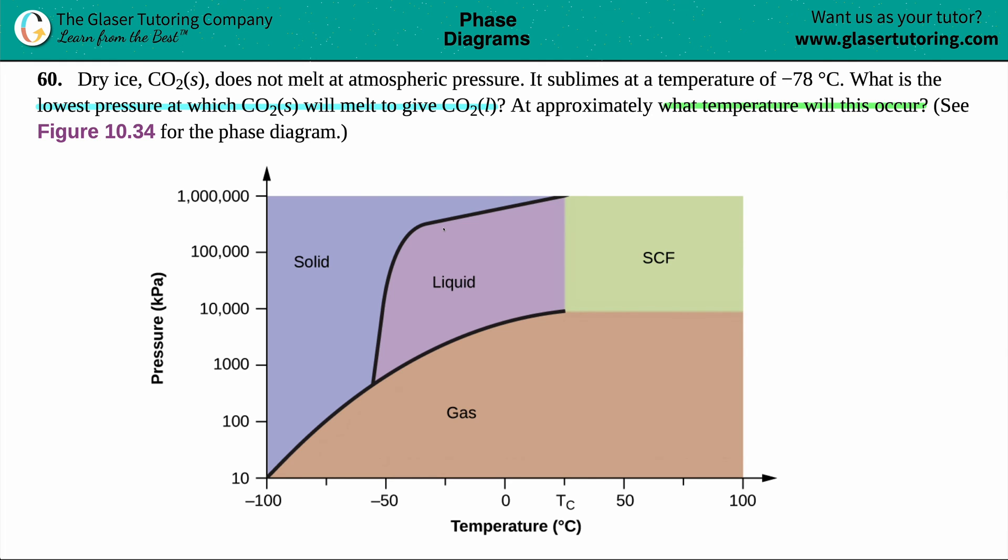The first information they gave was background: dry ice doesn't melt at atmospheric pressure, it sublimes at -78°C. But the question specifically asks what is the lowest pressure at which CO2 solid will melt. We know that melting is a phase change where a solid turns into its liquid.